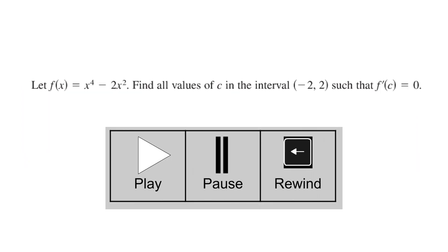And here's a problem applying that so we have a f of x there and want to find all values c in that interval minus 2 to 2 such that f prime of c is equal to 0. You should pause try to work the problem and rewind. Again this is going to involve Rolle's theorem.